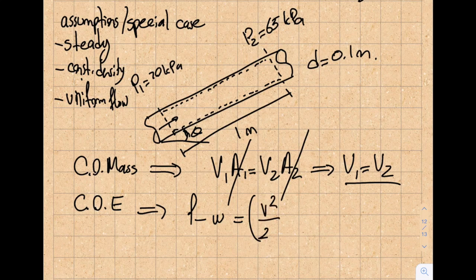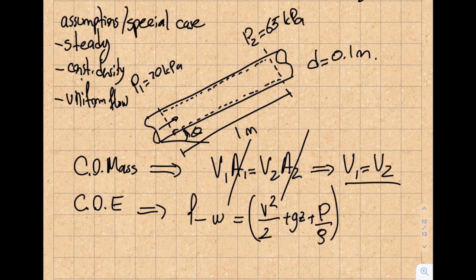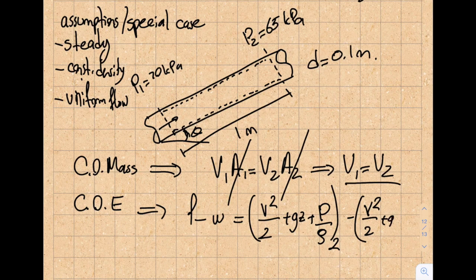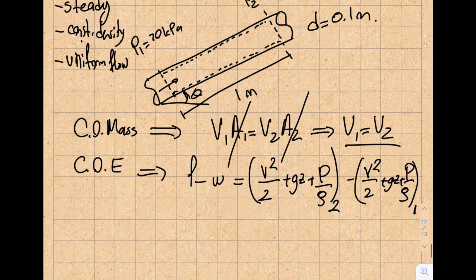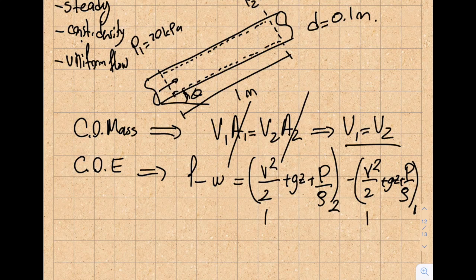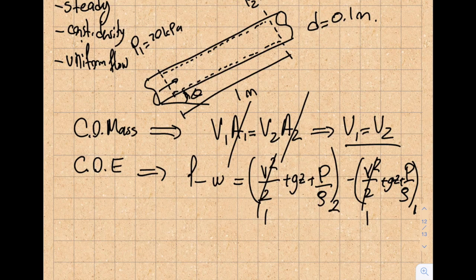So it will be V squared over 2 plus GZ plus P over rho at section 2 minus the same parentheses or the energy at section number 1. Let's look at the velocity here to here. So what will happen here is my velocities will cancel each other from conservation of mass. So let's take a look at the pressures.